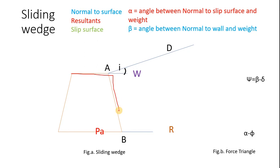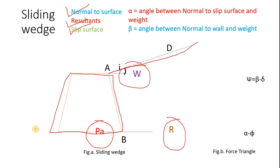Now consider this to be the retaining wall with the slope of the backfill. W is the weight, R is the reaction on the slip surface, and PA is the active earth pressure. This color represents normal to the surface, resultant, and slip surface.